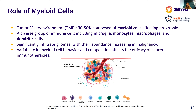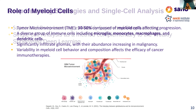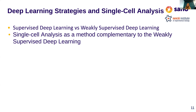Human leukocyte antigen staining will reveal myeloid cells on our tissue cores and microarrays. The tumor microenvironment of glioma consists of myeloid cells in 30 to 50 percent, and they affect tumor progression. These myeloid cells include microglia, monocytes, macrophages, and dendritic cells, and they significantly infiltrate gliomas with their abundance increasing with malignancy. We tested supervised deep learning and, in the second part, weakly supervised deep learning complemented by single-cell analysis.